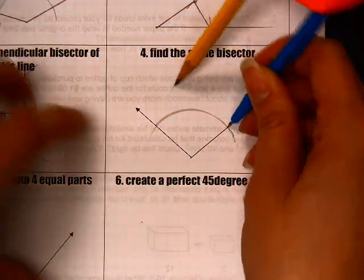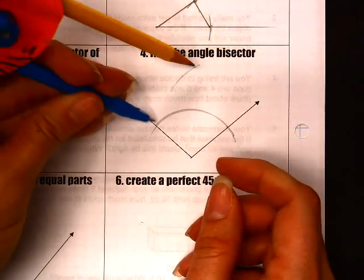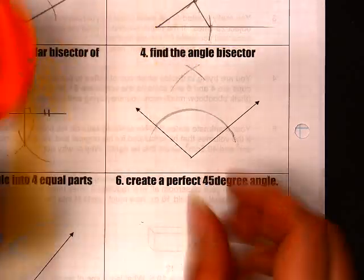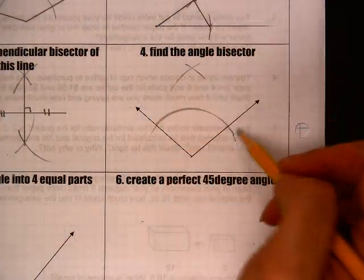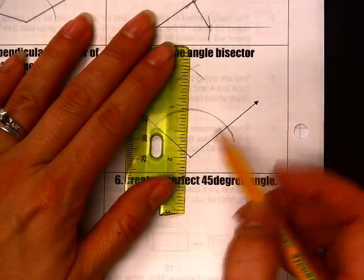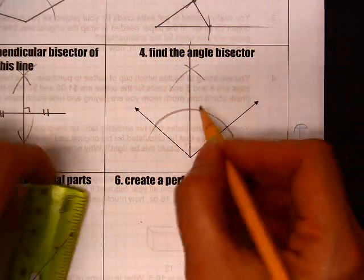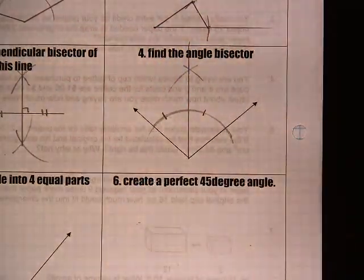So anywhere along here would be equal length to anywhere along here. Then those two parts would be the top part of my kite, and that would be my angle bisector.